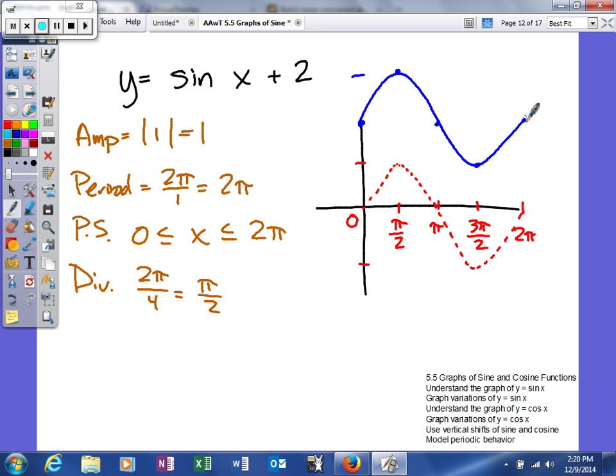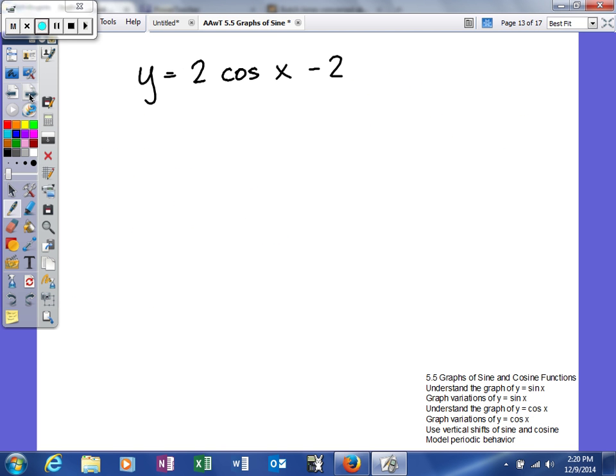Now what we're going to do is take a look at one that is cosine. So we'll go through the same process. Amplitude would be the absolute value of 2, which is 2.